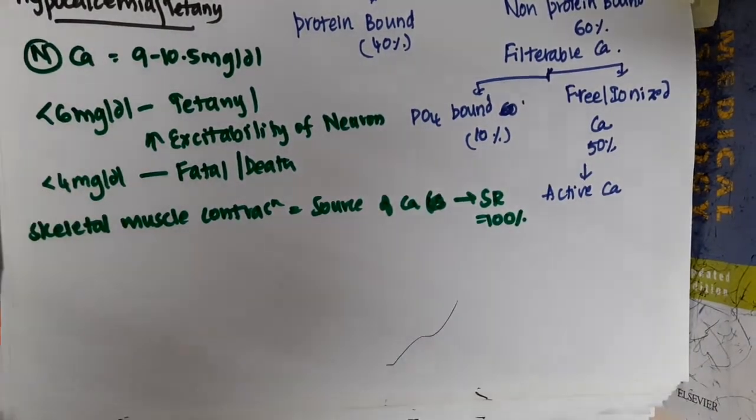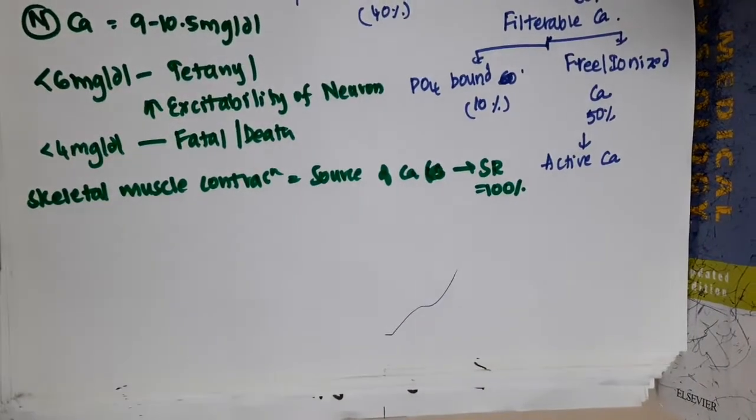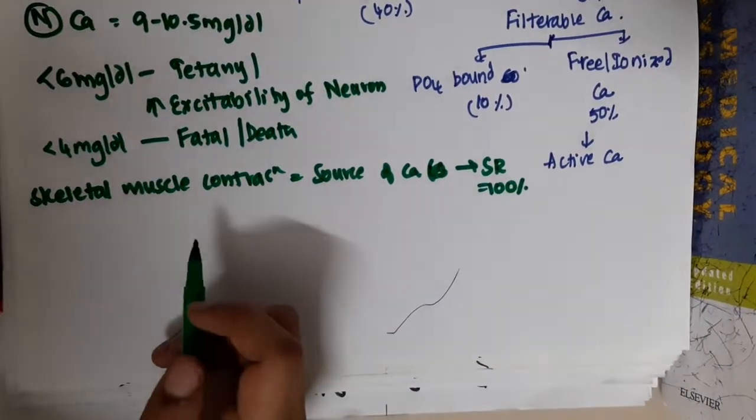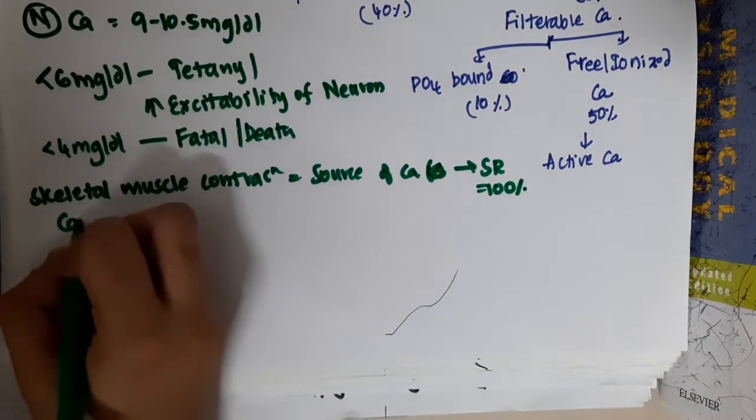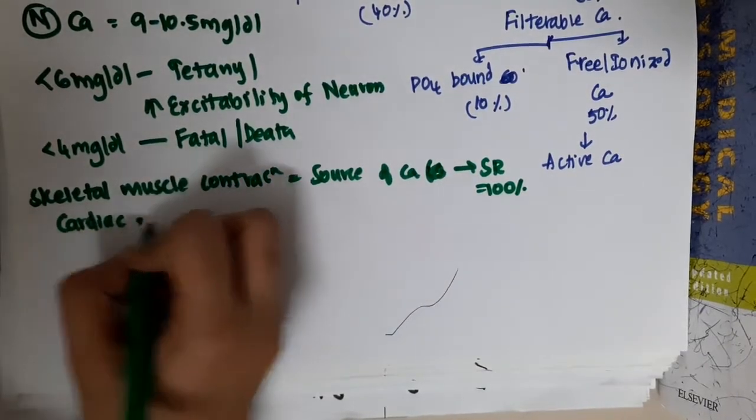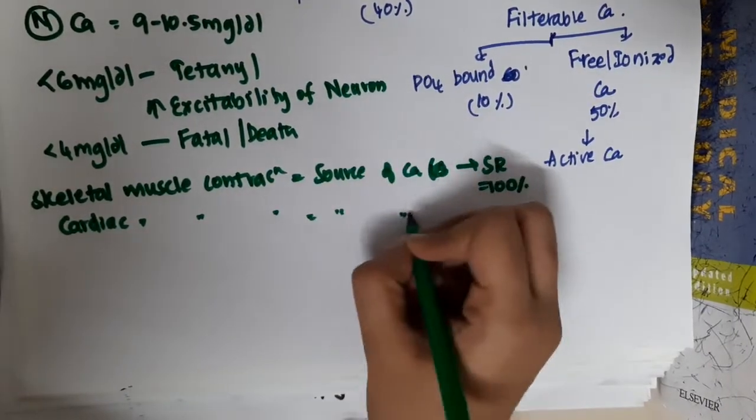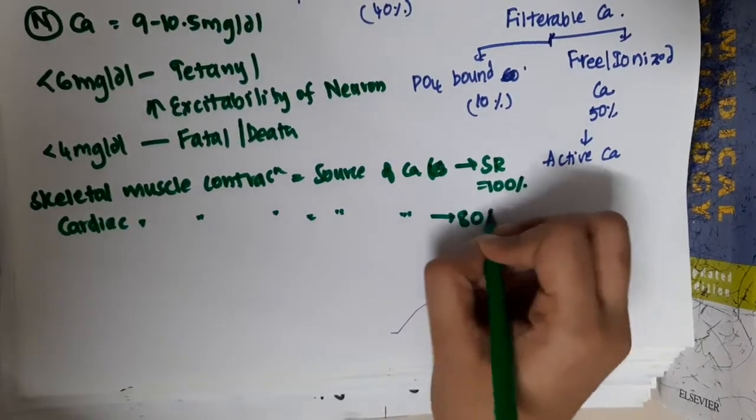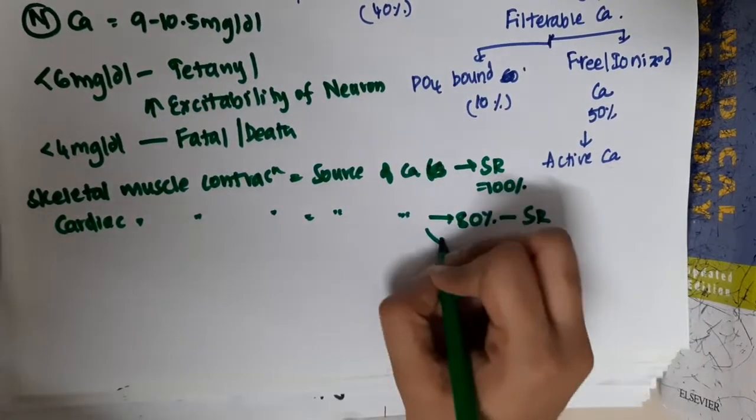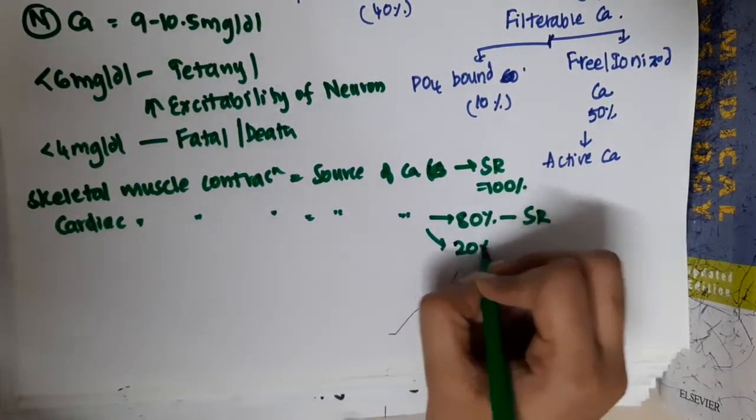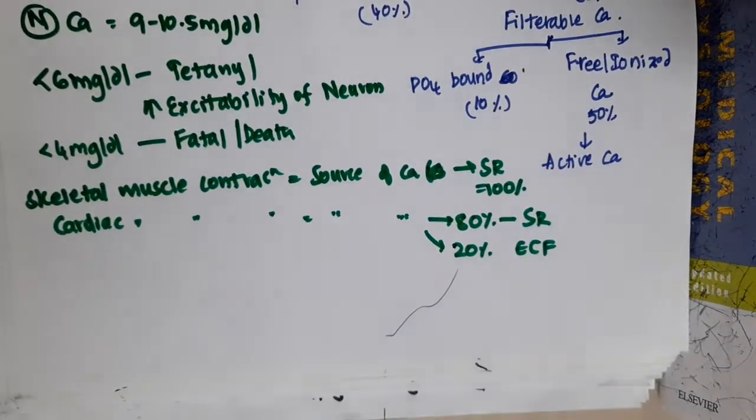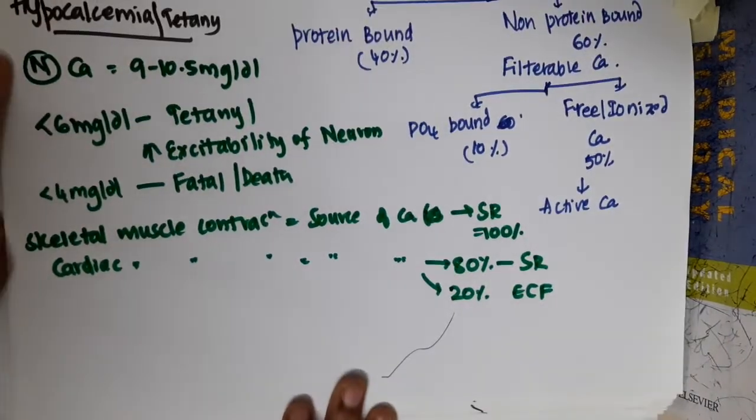In cardiac muscle contraction, the source of calcium is 80% from sarcoplasmic reticulum and 20% from extracellular fluid. So this is about hypocalcemia and source of calcium.